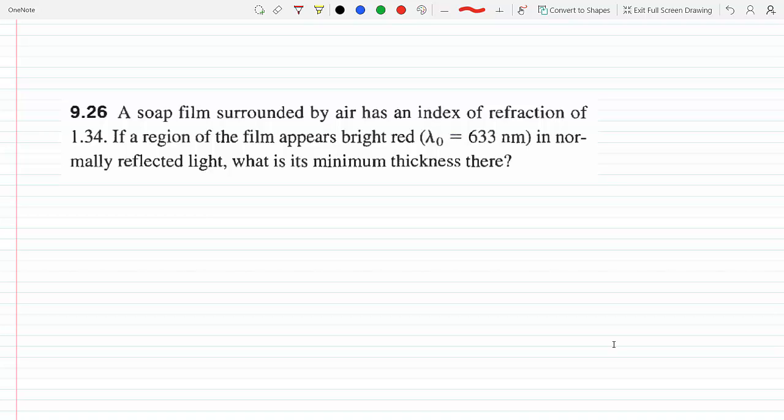So a bright spot, if you're getting, if this appears bright, to appear bright, what's the condition for the bright in the reflected light? It's d cosine theta_t has to equal to m plus 1 over 4 times lambda of the film.